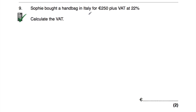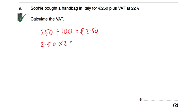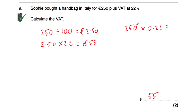Question nine: a handbag in Italy costs €250 plus VAT at 22%. Calculate the VAT only. We need 22% of €250. €250 divided by 100 = €2.50 (1%); multiplied by 22 = €55. So the VAT is €55. Alternatively, multiply by 0.22 directly: 250 × 0.22 = €55. Either approach gives the VAT as €55.